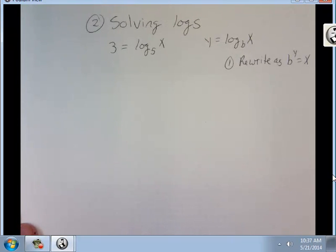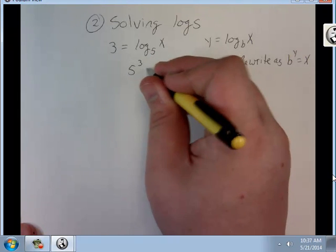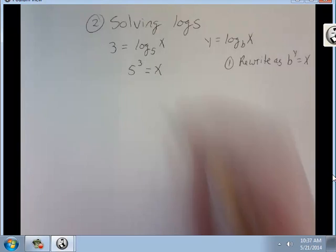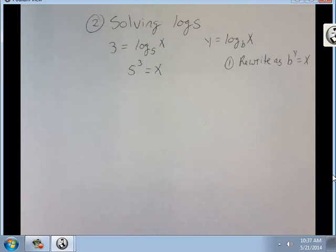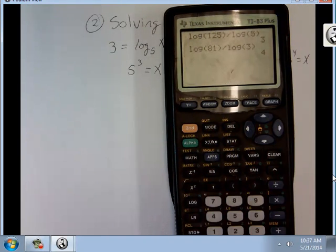So, base to the answer equals x. Now, I know what 5 to the 3rd is. I can just take this here calculator. Do 5 to the 3 and get my answer. There we go. That's all there is to these.